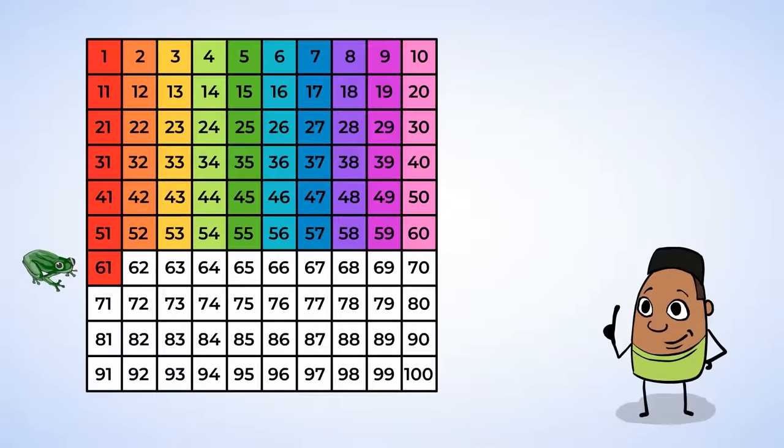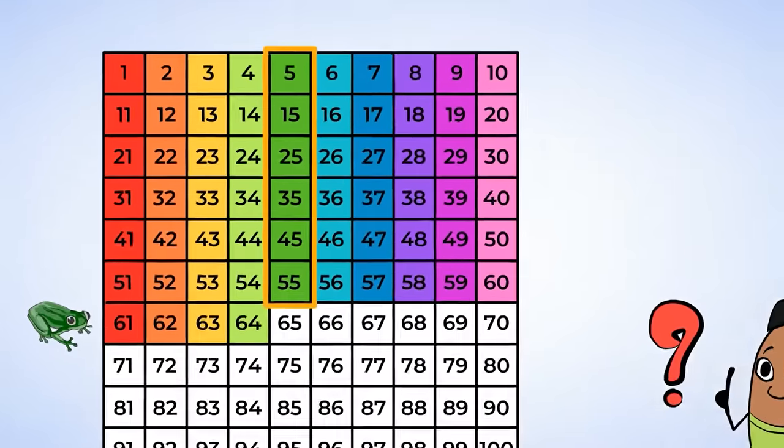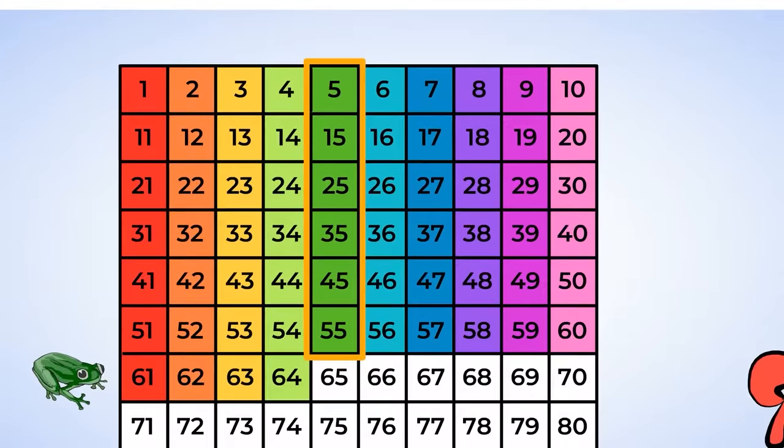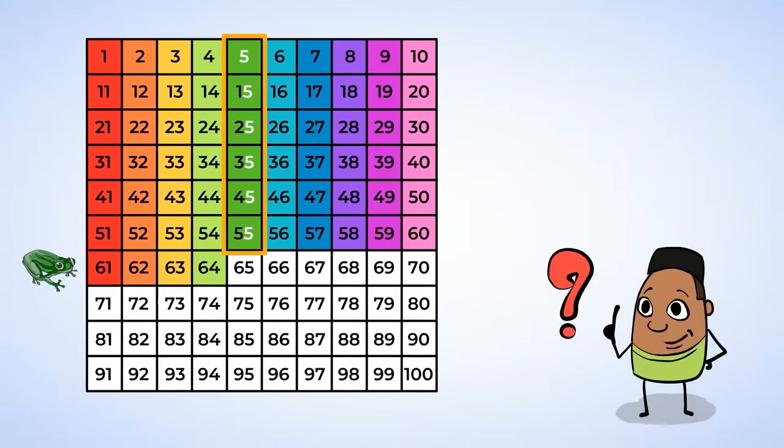We start all over again with 61, 62, 63, 64. And what comes next? Well, look at all the dark green numbers. What's at the end of all those numbers? 5. That's right. So after 64 is 65. Then 66, 67, 68, 69, 70.